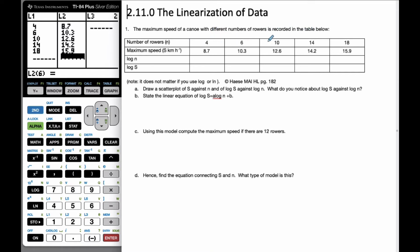So I have 4, 6, 10 rowers in my boat, and this is the maximum speed that they can get, and it's in kilometers per hour, and my variable is s.